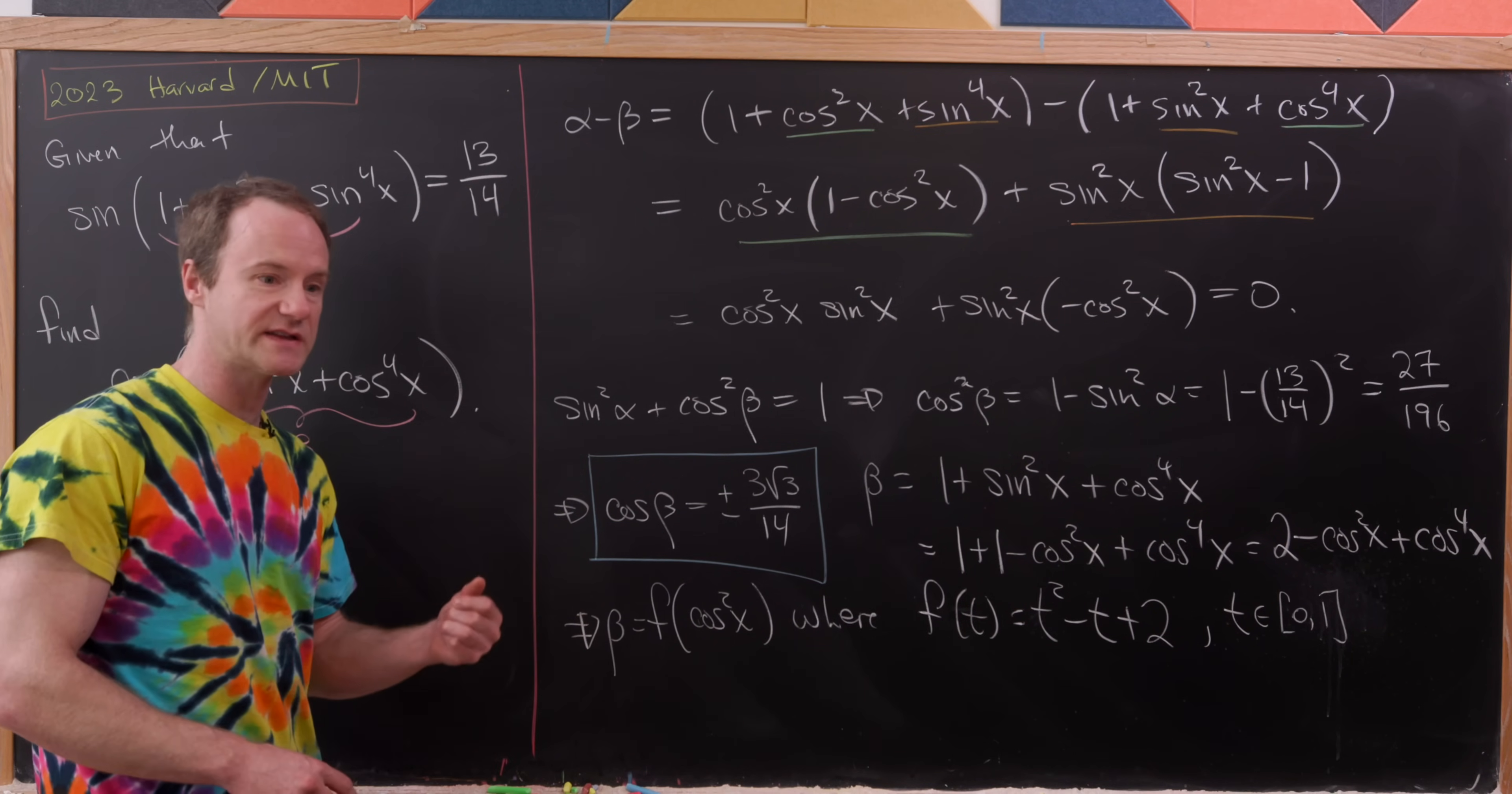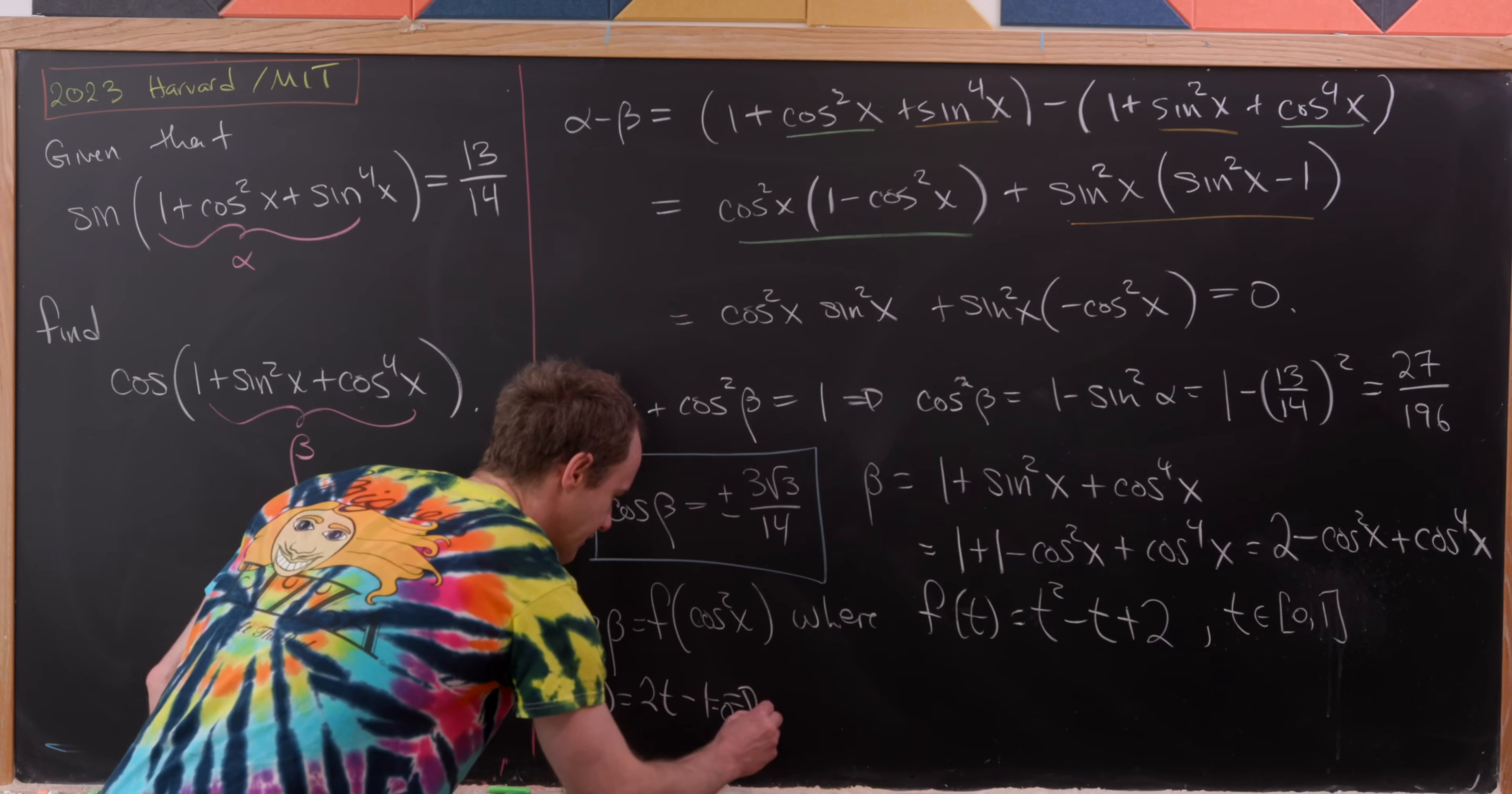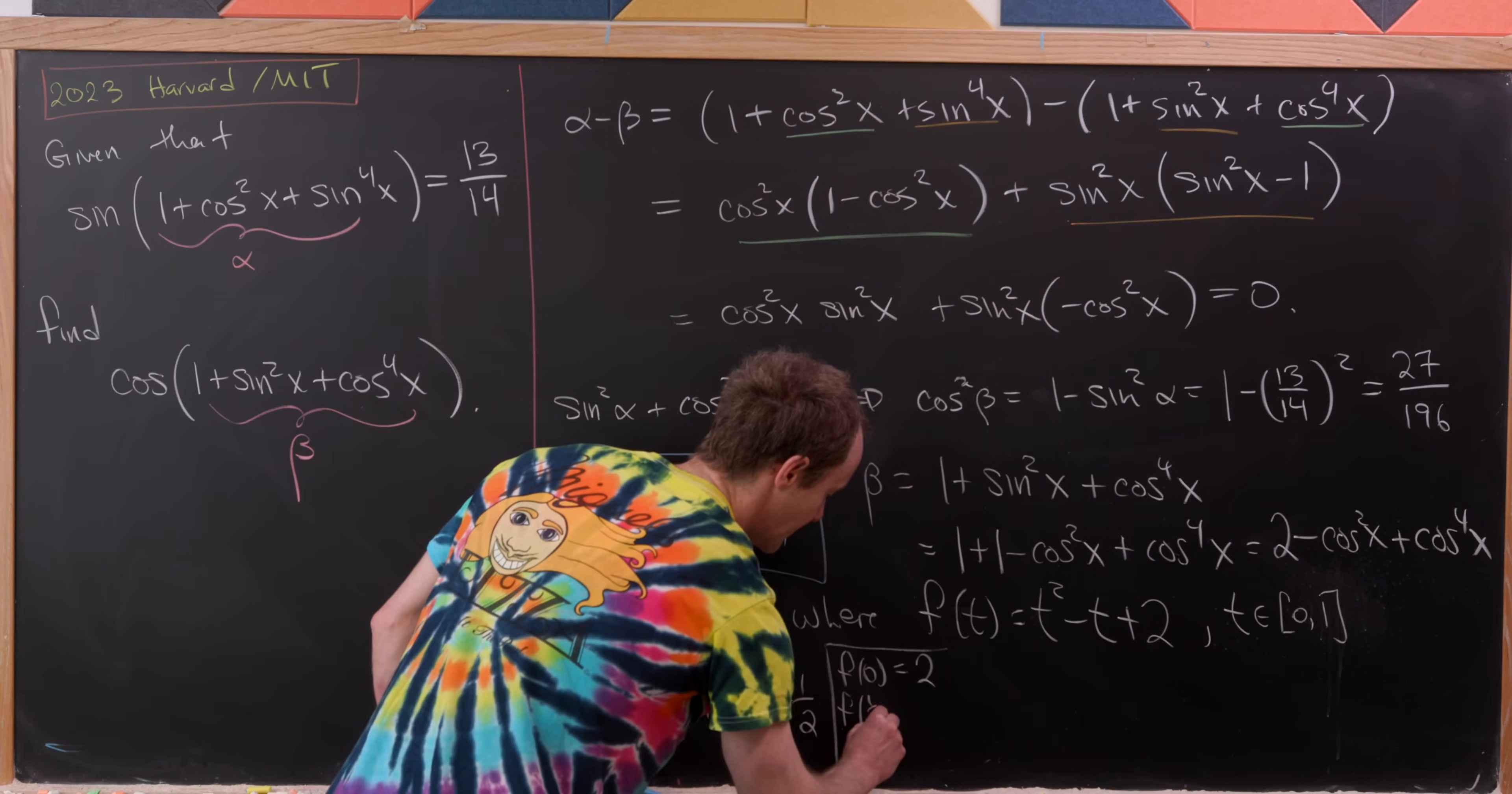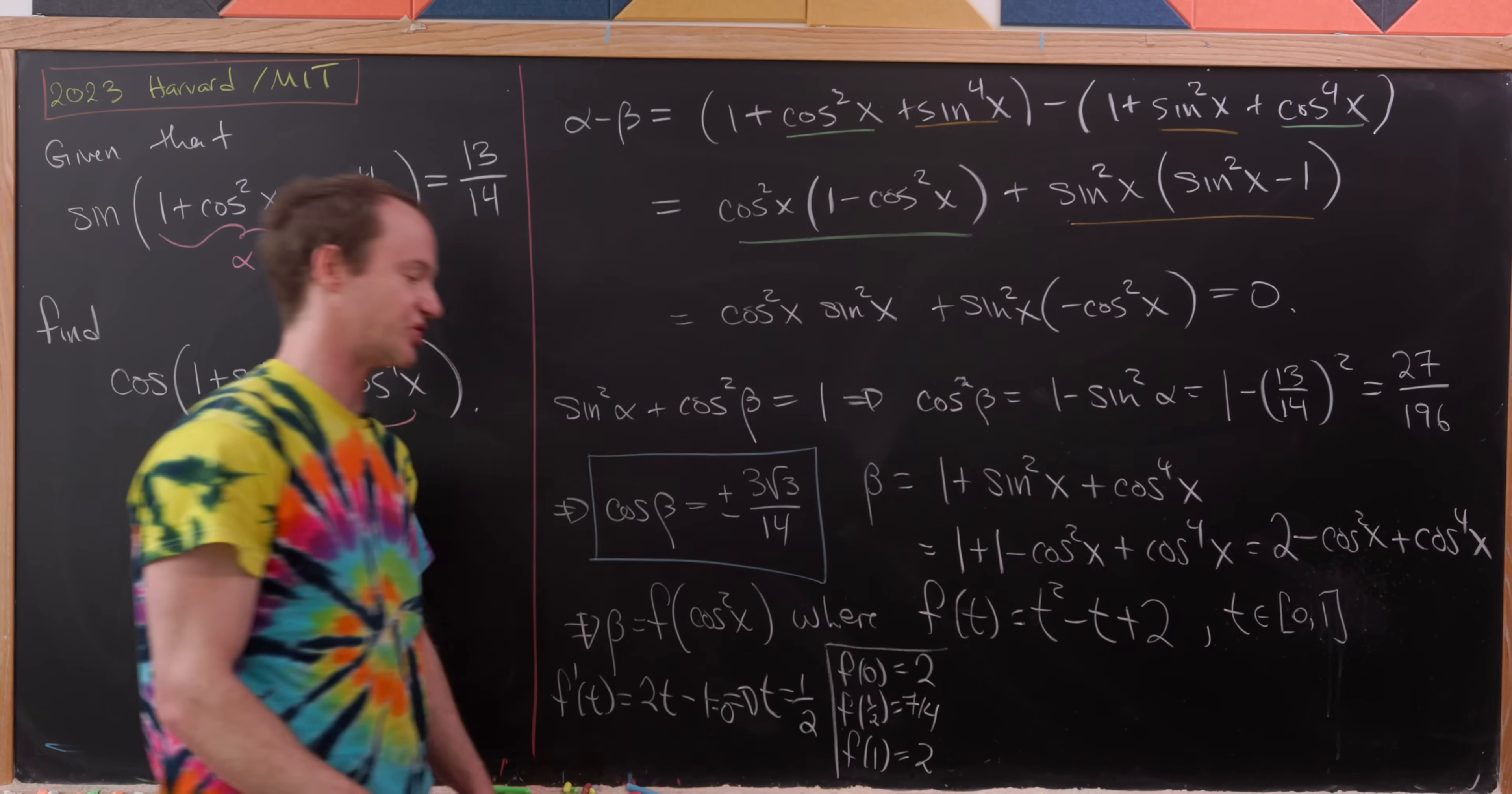So now how could we use the extreme value theorem? We could find the critical points and then test both the critical points and the endpoints to figure out where we get a minimum and a maximum. Our critical point occurs at 2t - 1 = 0, in other words when t = 1/2. And so now we can simply make a list. We can look at f(0)—notice f(0) = 2. We can look at f(1/2), which equals 7/4. And then we can look at f(1), but let's observe that f(1) is also equal to 2.